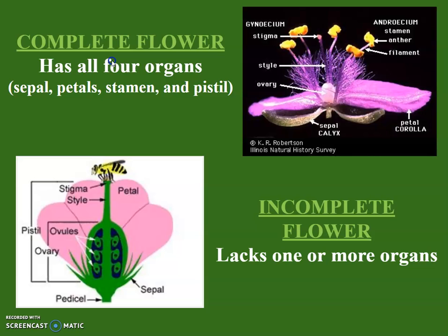For a flower to be considered a complete flower, it has to have all four organs: the sepal, the petals, the stamen, and the pistil. This is an example of a complete flower — you have your sepal at the bottom, your petals, your stamen, and your pistil, which includes the stigma and style.